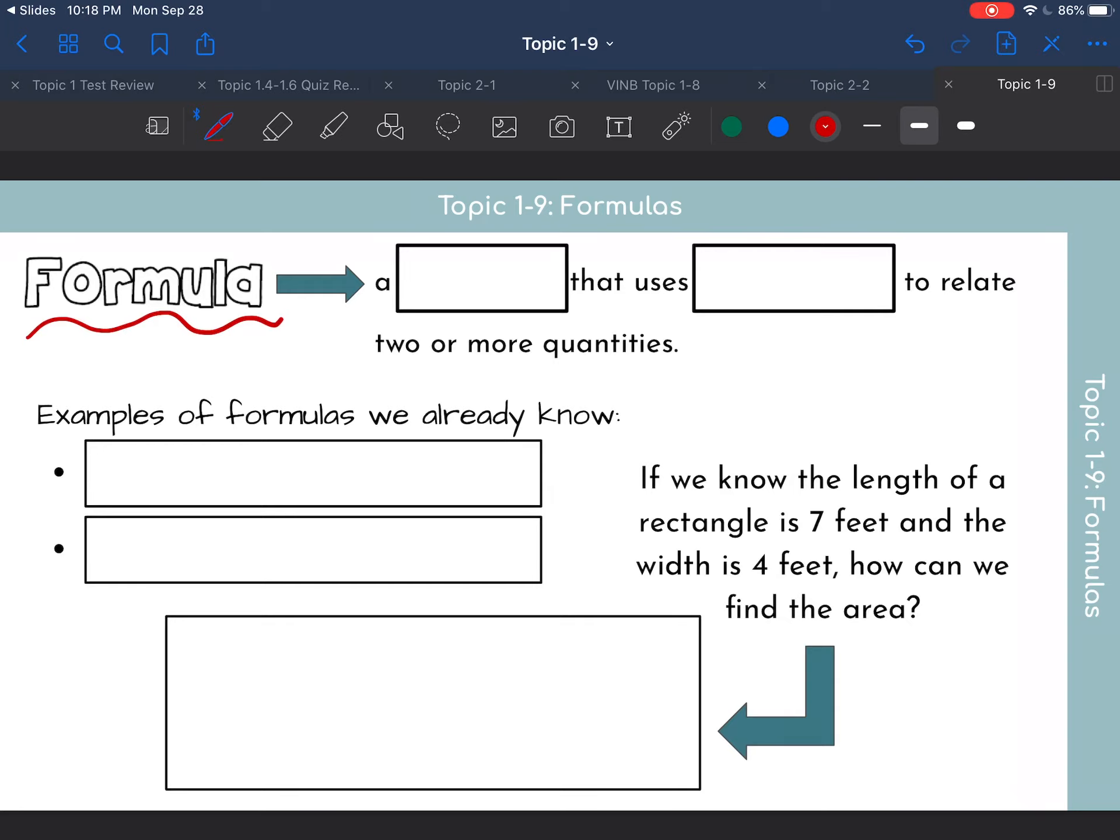Okay, so you may have heard of the word formula before, maybe in science. But a formula is a rule that uses variables to relate two or more quantities. So basically a formula is like a rule. It has a bunch of variables and you use that rule to help you solve a problem. So examples of formulas that we actually already know.